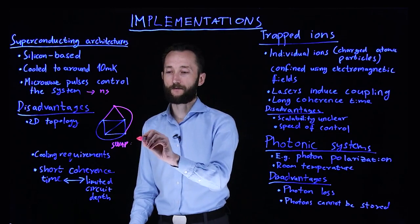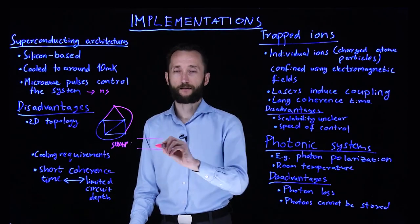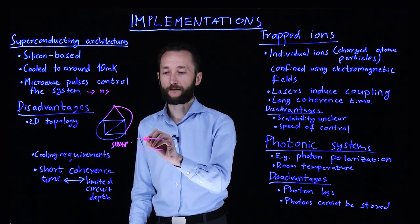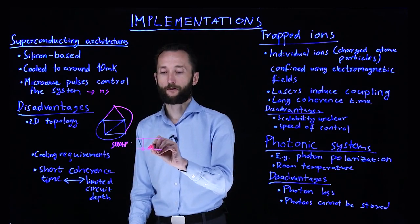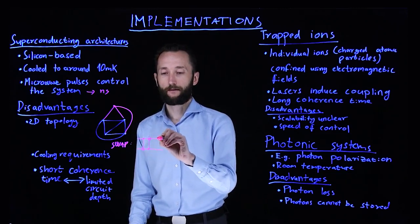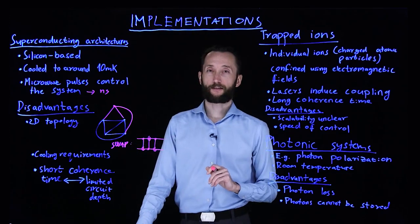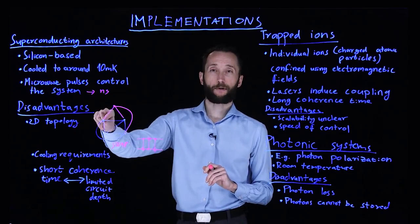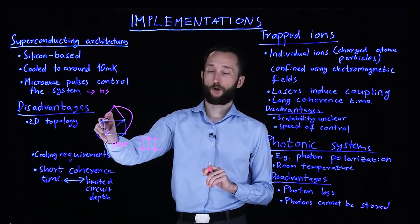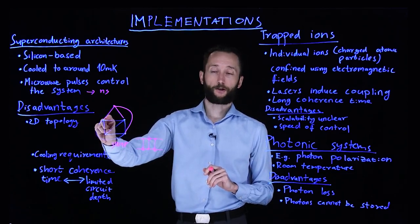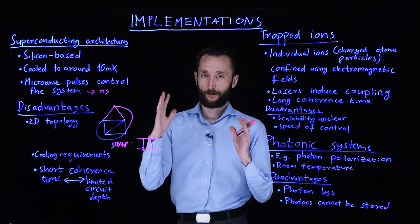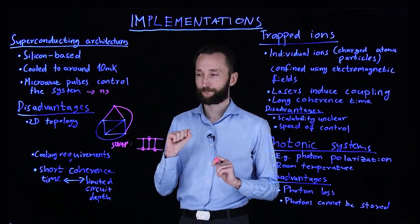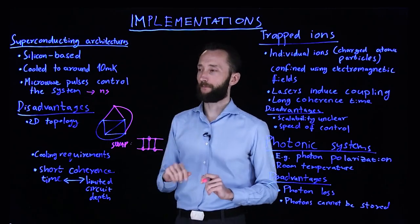The swap is very simple. If you look at the circuit diagram of it, this is just a CNOT, followed by a CNOT the other way, and then a third one. So it introduces three gates to perform the swap. Then you perform the gate that you wanted, and you could swap them back. So you would need seven gates just to perform one gate operation.